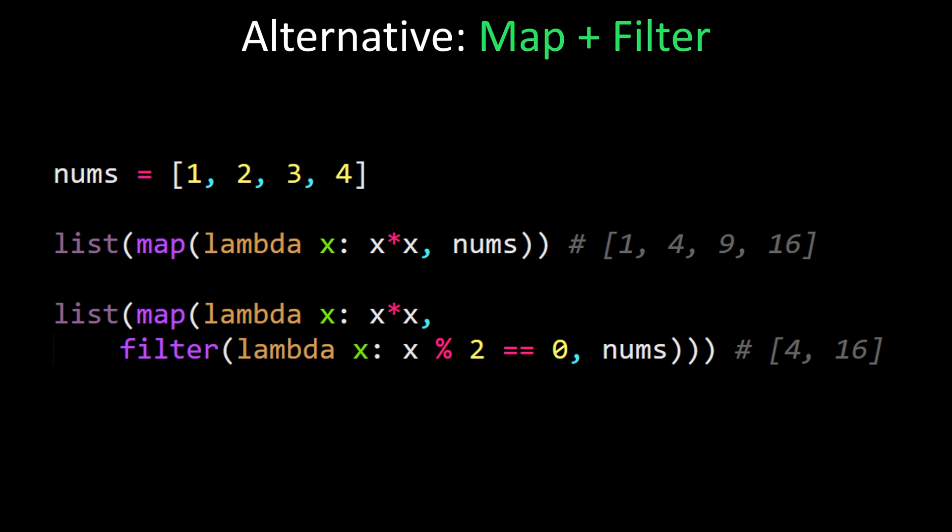And the third line, you can add a filter to that. So first apply a filter with a lambda function that does the modulo 2 equals 0 conditional, and then on top of that,